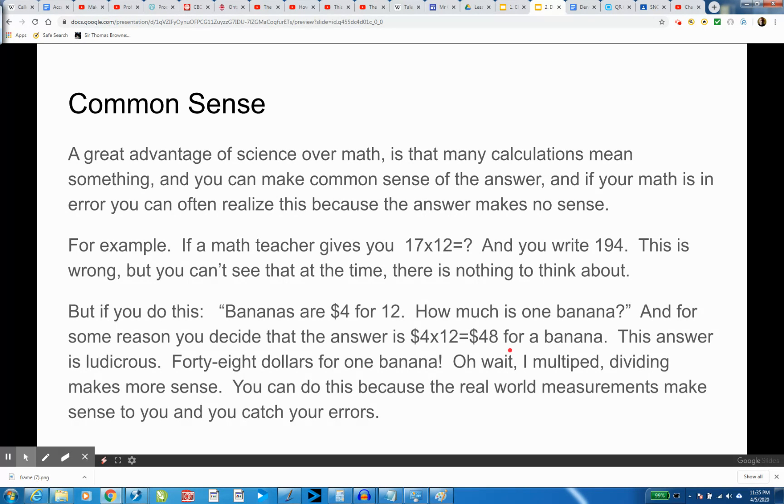For example, if a math teacher gives you 17 times 12, and you write 194. This is wrong, but you can't see it at the time because there's nothing to think about.